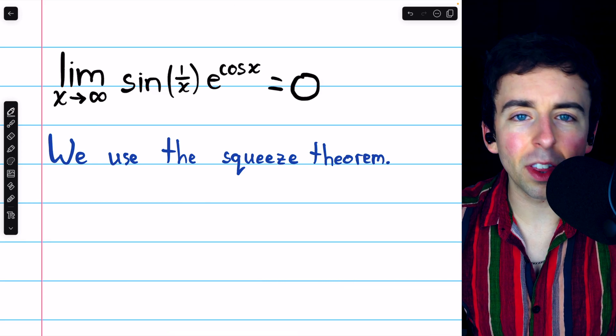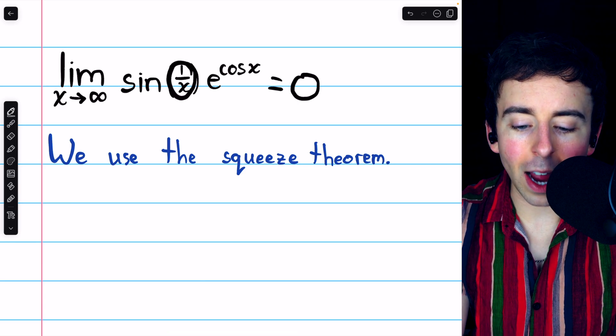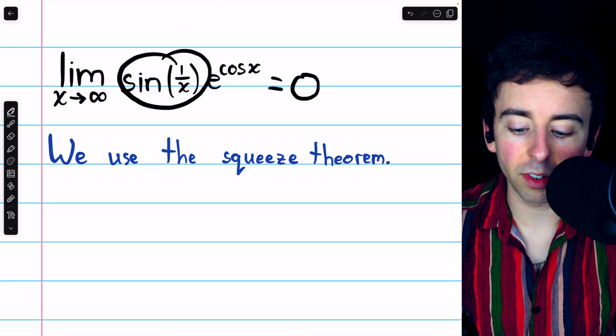It's pretty easy to figure this out if you think about what's going on here. As x goes to infinity, 1 over x will approach zero, so sine of 1 over x will also approach zero,